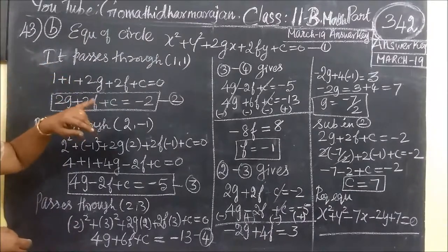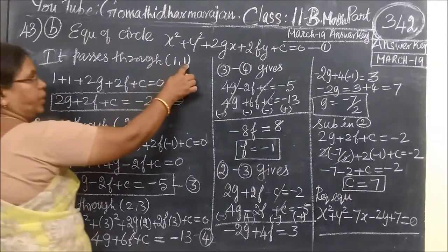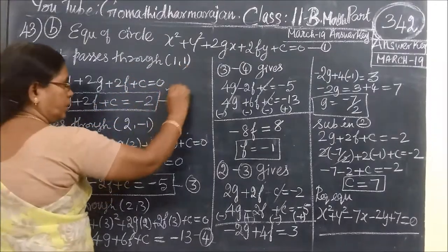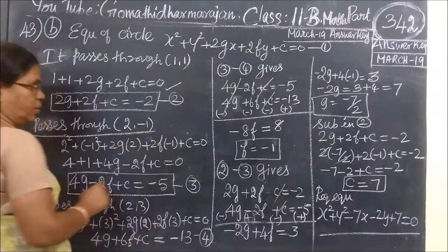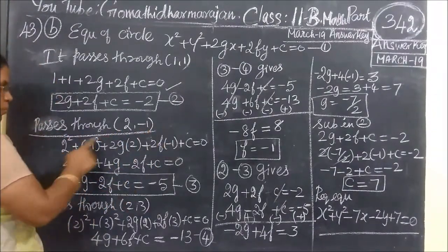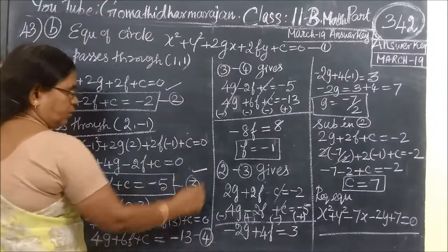That means X, Y and G value. So X1, Y1, you have given equation 1. It passes through 2, minus 1. So for X is 2, then Y is minus 1, you have given equation 3.